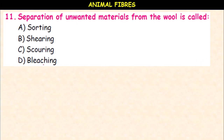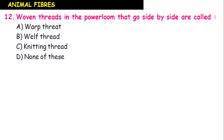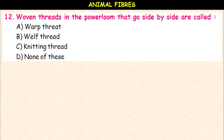Separation of unwanted materials from the wool is called sorting, shearing, scouring, or bleaching? It is sorting — the process of separation of unwanted materials from the wool. Woven threads in the power loom that go side by side are called warp threads, weft threads, or knitting threads? They are weft threads.